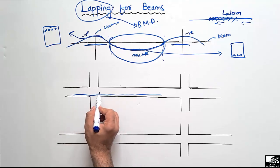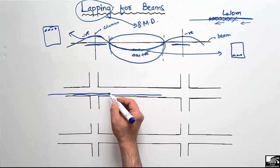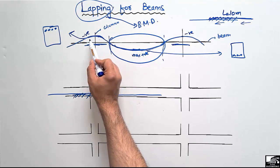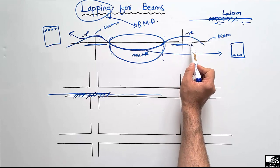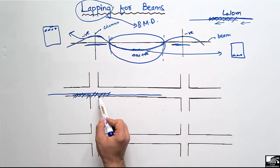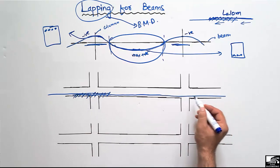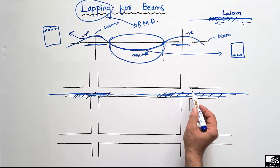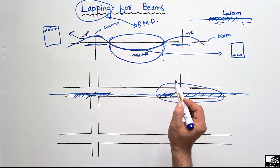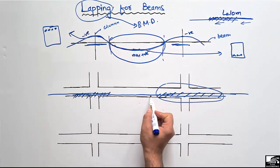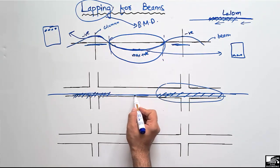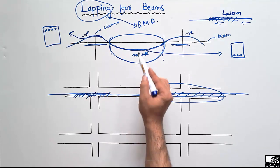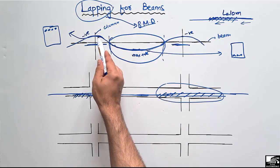We can provide lapping in the sections near the supports where we don't have positive bending moment. The lapping of bars will be in these zones. At the mid portion of the beam we have maximum positive bending moment, therefore we cannot provide lapping of bars in that critical region. The lapping of bars is dependent on the bending moment diagram.